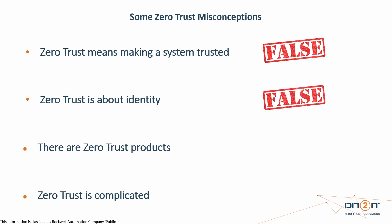Zero trust is also not about identity. It consumes identity, but it isn't equal to identity. I can prove that with two words: Snowden, Manning. They were trusted users — they had all the right identity and MFA, but nobody looked at their packets post-authentication.